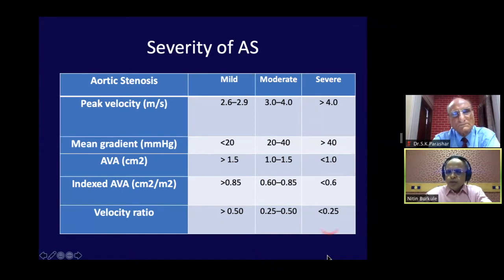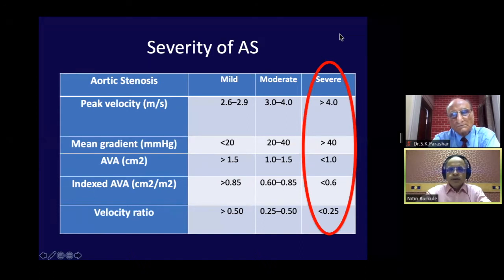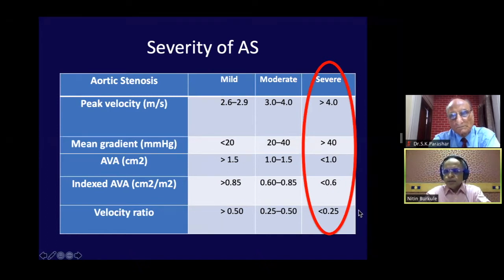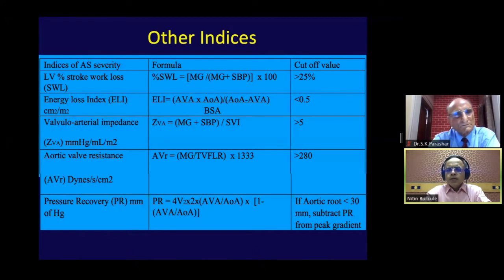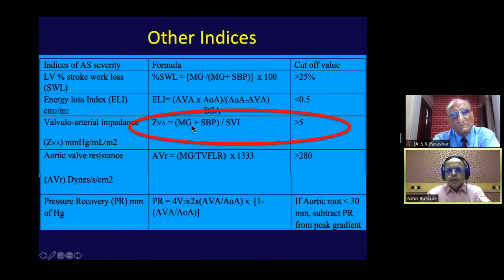We diagnose severe aortic stenosis when the mean gradient is more than 40, valve area less than 1 cm², and indexed valve area less than 0.6. There are other indices of severity, including the valve-arterial impedance, which is very handy because the numerator is the mean gradient of aortic stenosis plus systolic BP — representing the entire afterload the LV faces — divided by the stroke volume index. If it is more than 5, you know the LV is really suffering.